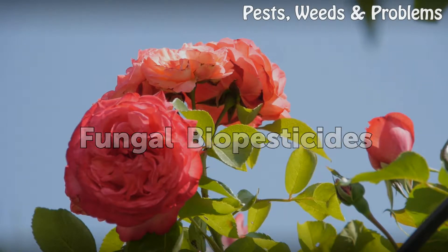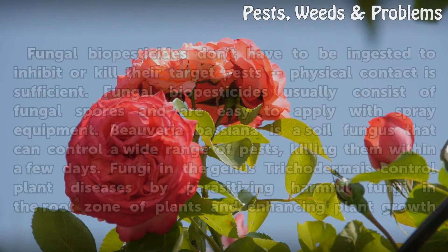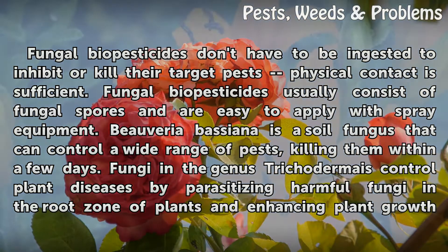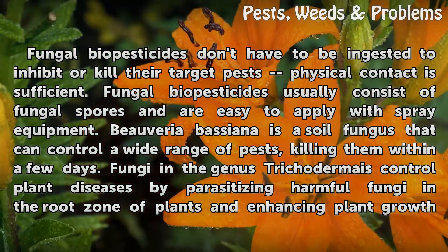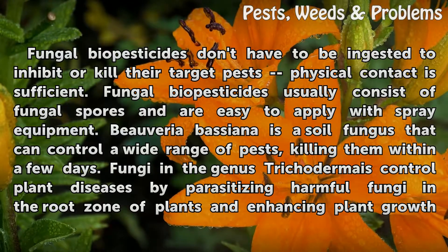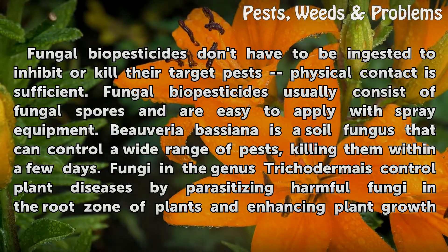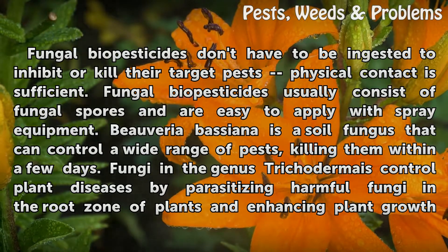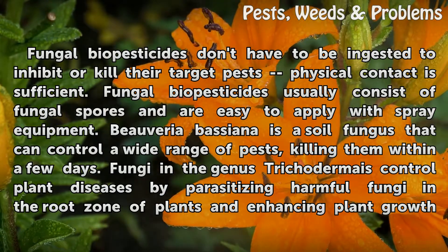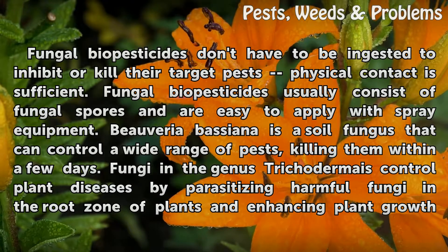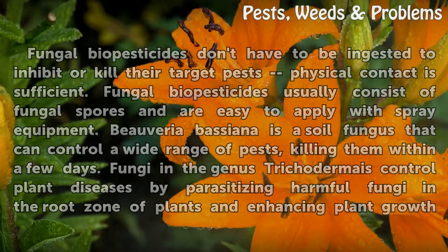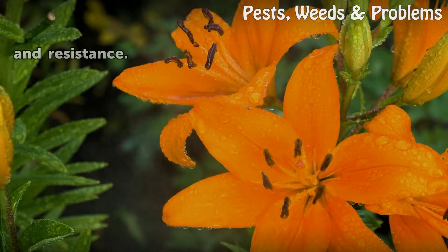Fungal Biopesticides. Fungal biopesticides don't have to be ingested to inhibit or kill their target pest — physical contact is sufficient. Fungal biopesticides usually consist of fungal spores and are easy to apply with spray equipment. Beauveria bassiana is a soil fungus that can control a wide range of pests, killing them within a few days. Fungi in the genus Trichoderma control plant diseases by parasitizing harmful fungi in the root zone of plants and enhancing plant growth and resistance.